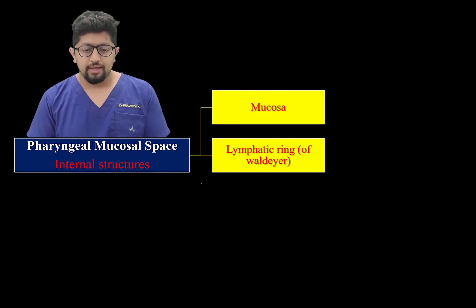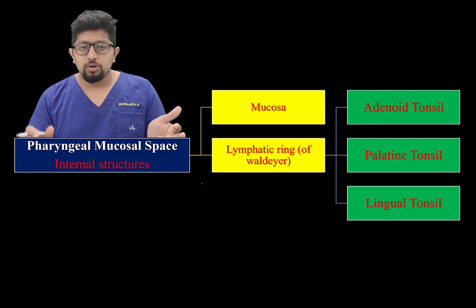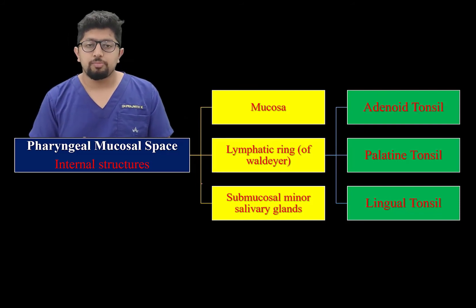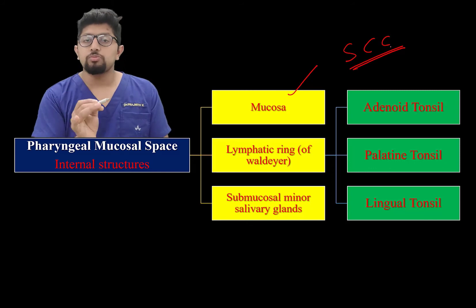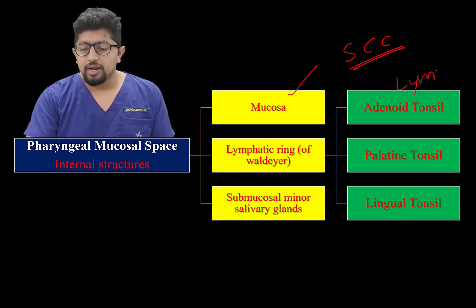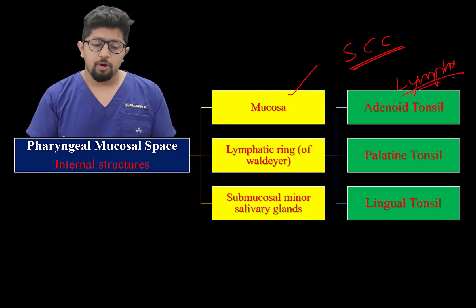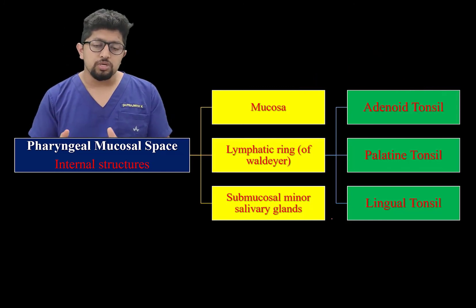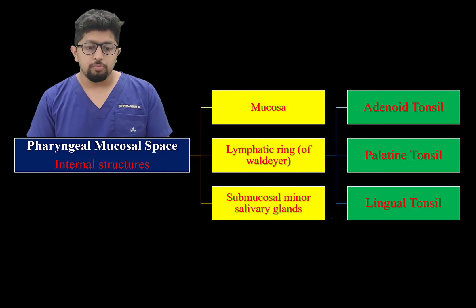The pharyngeal mucosal space contains the mucosal lining, which can give rise to squamous cell carcinoma — one of the most common lesions in this region. It also contains the lymphatic ring: adenoid tonsil on the roof, palatine tonsil laterally, and lingual tonsil on the tongue. These tonsils can develop lymphoma or hyperplasia in children. Submucosal minor salivary glands are also present and can give rise to benign mixed tumors or pleomorphic adenoma.